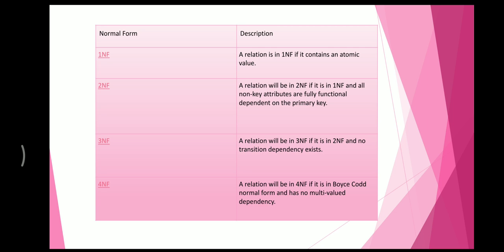Normal forms and their descriptions: A relation is in 1NF if it contains only atomic values. A relation is in 2NF if it is in 1NF and all non-key attributes are fully functionally dependent on the primary key. A relation is in 3NF if it is in 2NF and no transitive dependency exists. A relation is in 4NF (BCNF) if it is in Boyce-Codd Normal Form and has no multi-valued dependency.